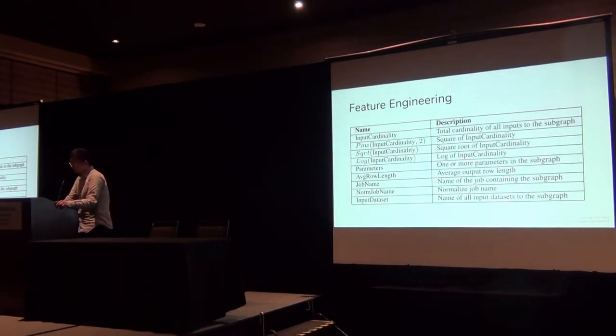When we featurize each subgraph, this is a list of features we considered. First, it's very intuitive to include the input cardinality as feature because in most cases, it will have a direct impact on the output cardinality. To model a non-linear relationship between the input and output cardinality, we also include some other mathematical transformations, including the squares, square root, and logarithm of input cardinality as features. That's the input cardinality portion. Then the parameters of the subgraphs also matter, for example, the filtering and joining particular values. And lastly, we have some metadata that's important as well, like the name and normalized name of each job and input query and dataset. Because these metadata can sometimes be used as arguments to user-defined functions, it's important to capture them as well.